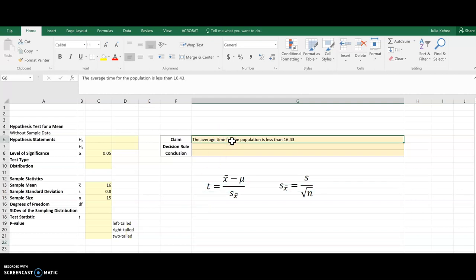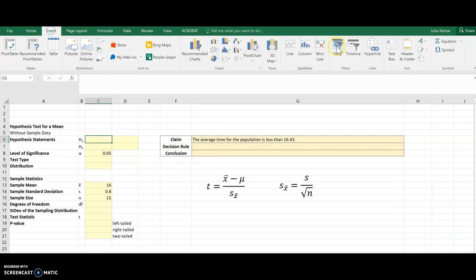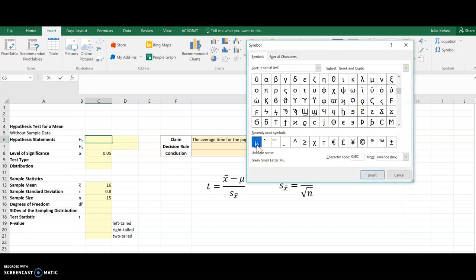So I start out with a claim here: the average time for the population is less than 16.43. I see that word average, I know I'm talking about a mean, so I'm going to come over here and grab that mean symbol, mu.